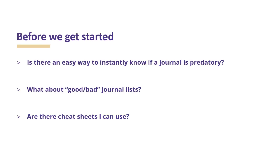Before we get started, let's talk about some commonly asked questions. Is there an easy way to instantly know if a journal is predatory? No — journals need to be evaluated first. What about using good or bad journal lists? These lists can be unreliable, which we will talk about later. And are there cheat sheets that I can use? There are resources that you can use in evaluating journals, which we will go into later in this presentation.